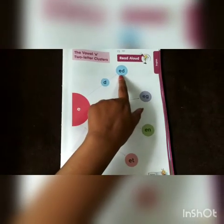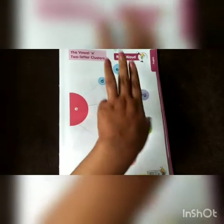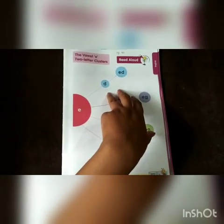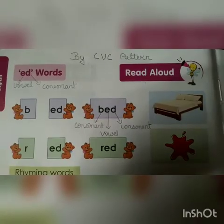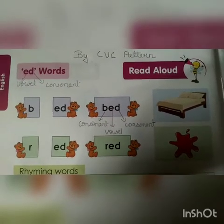Now we are going to make a 3-letter cluster word with the help of the CVC pattern. C for consonant, V for vowel, and C for consonant. This VC is the 2-letter cluster word, and now we will make a 3-letter cluster word with the help of CVC.